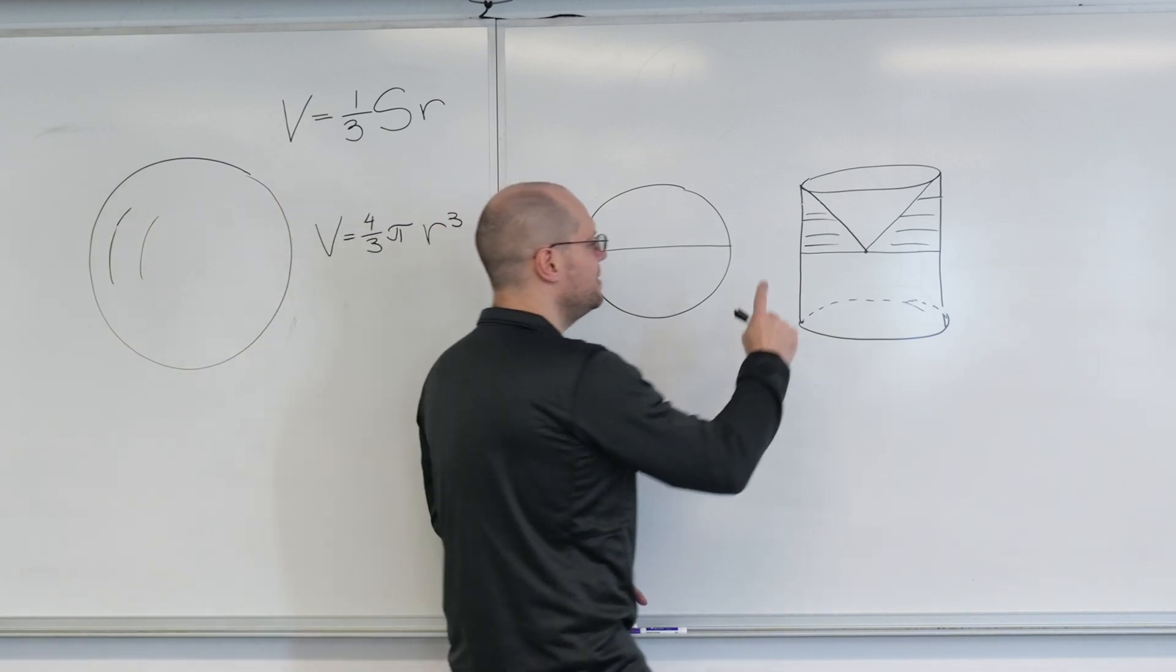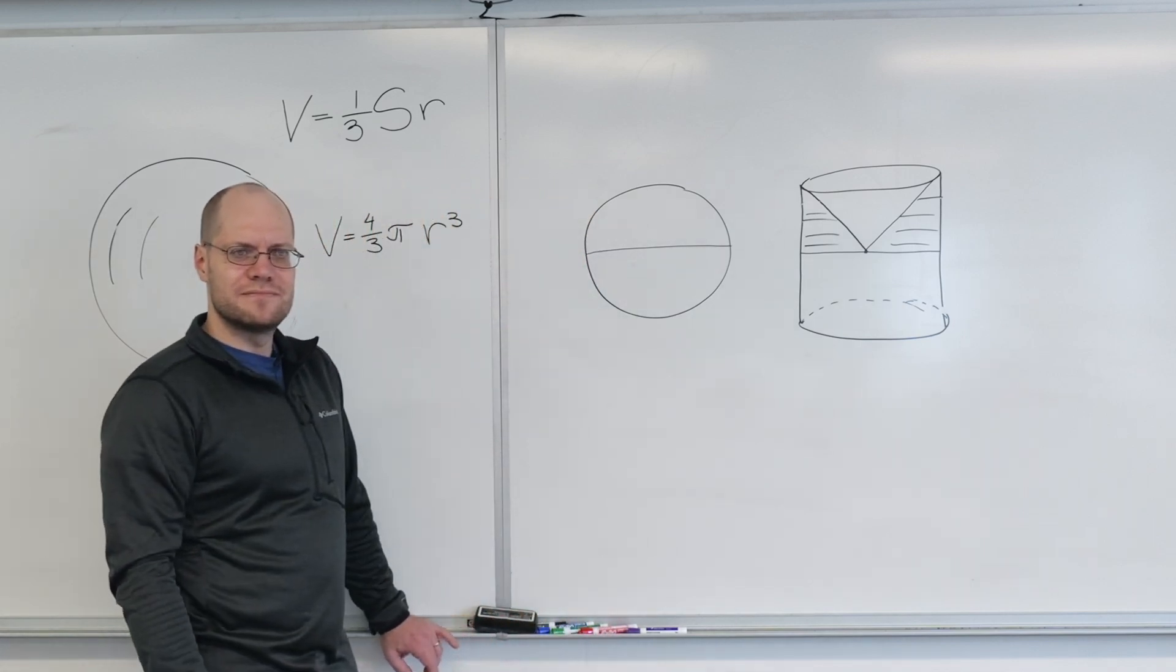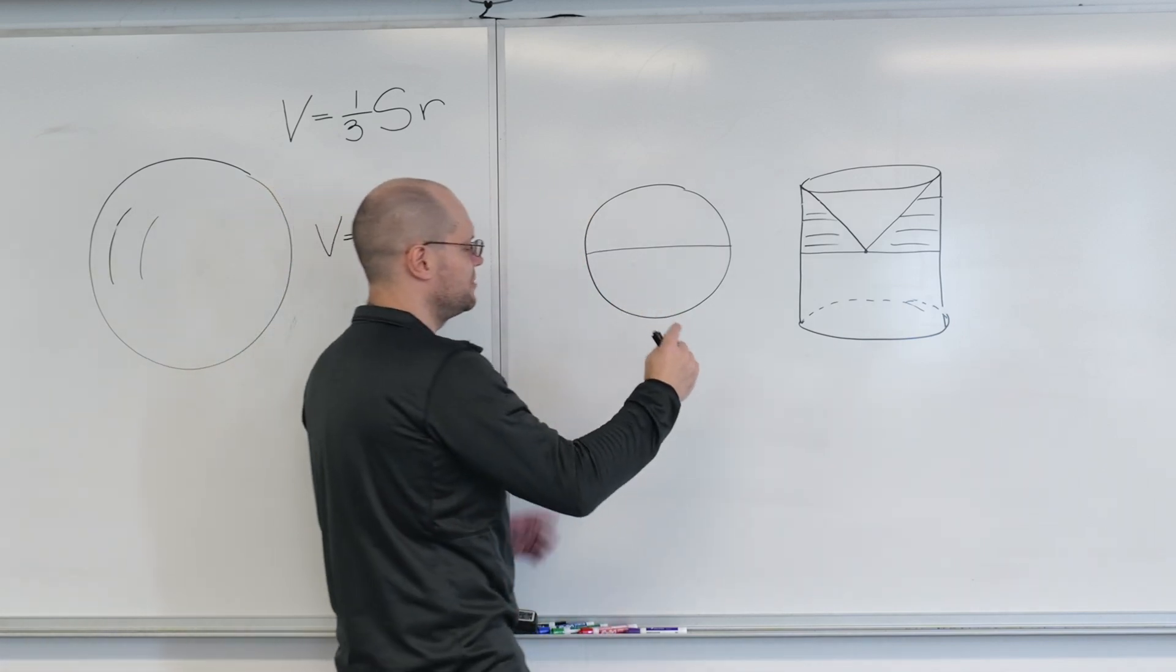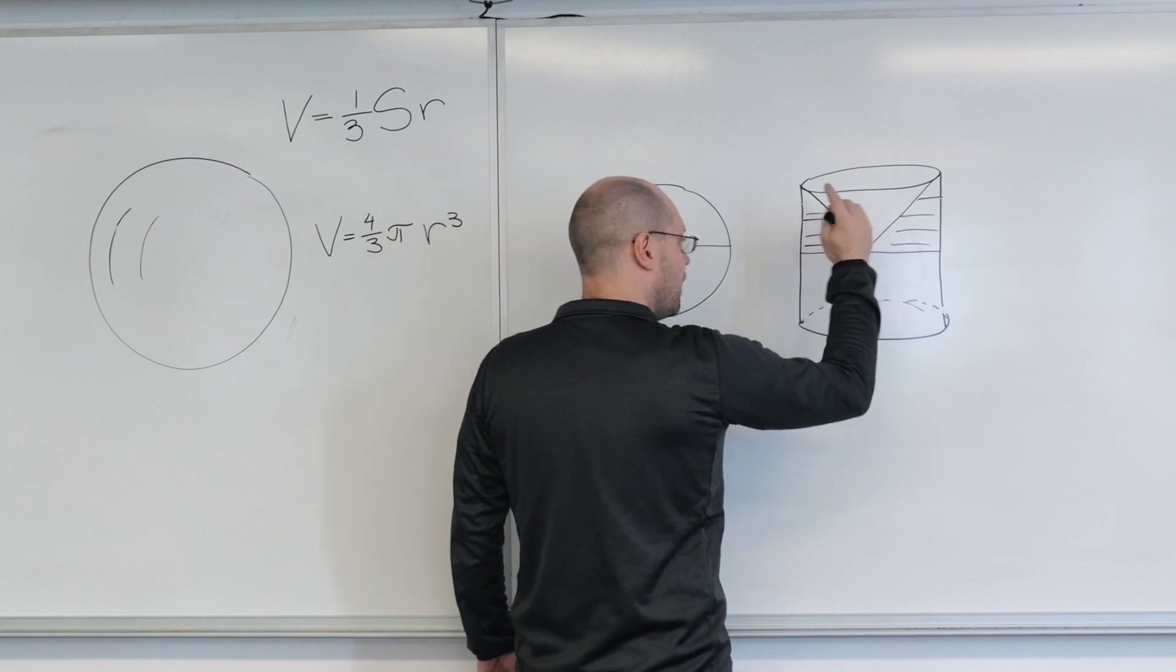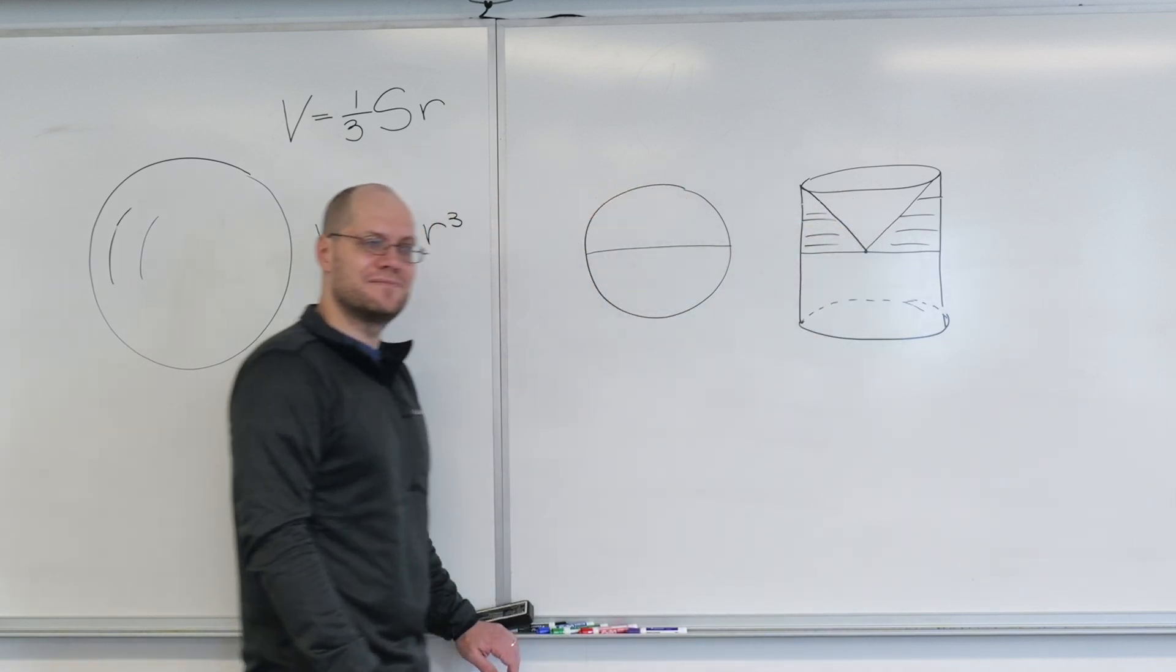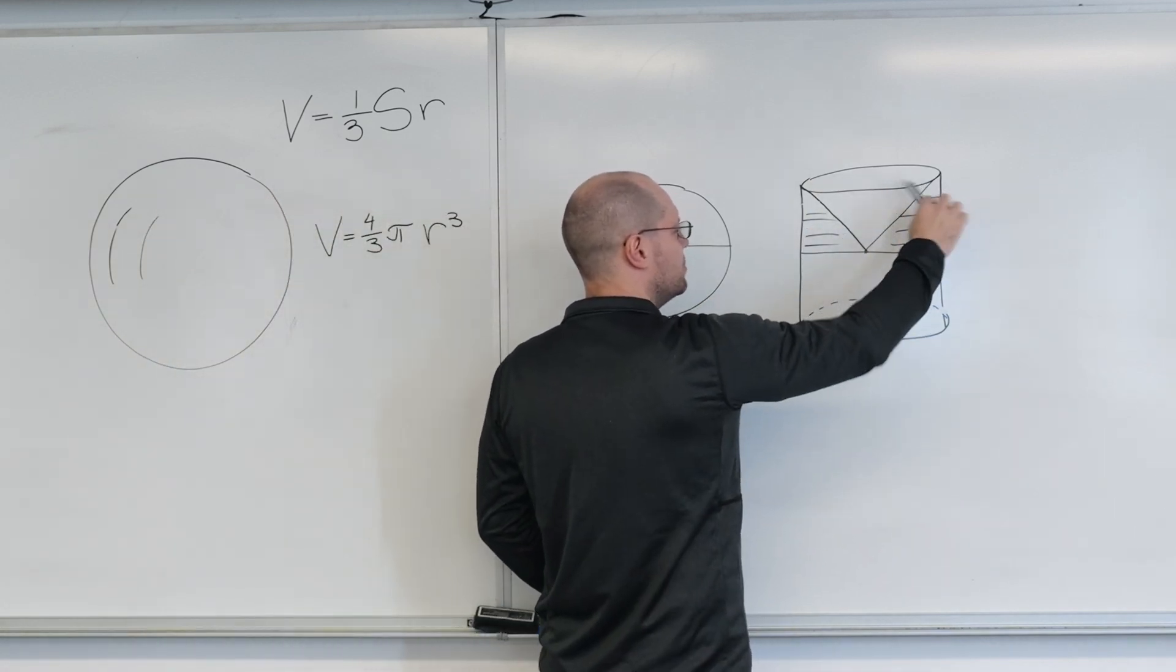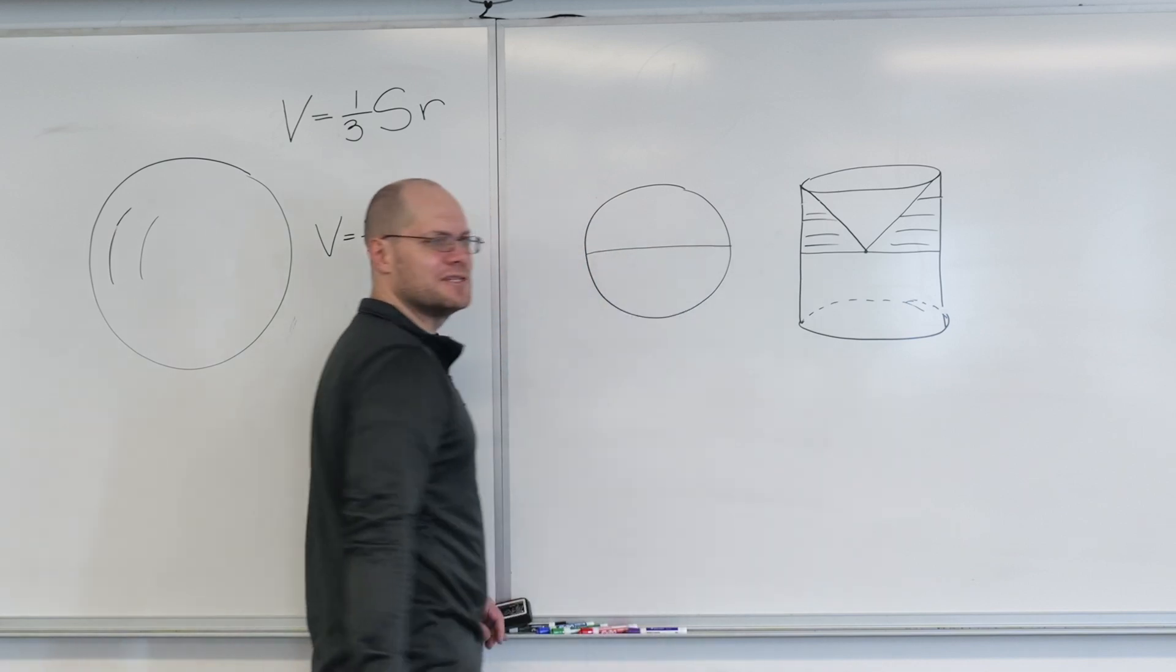Archimedes knew the volume of the remaining part. I will prove to you that the volume of the part where you take a cylinder and you remove the cone is the same as the volume of the sphere.